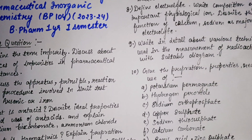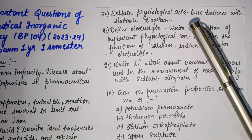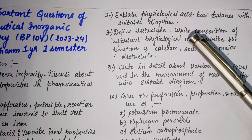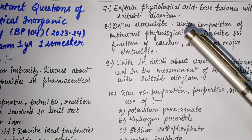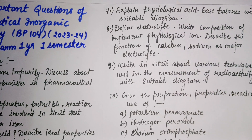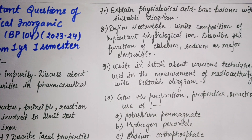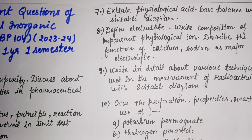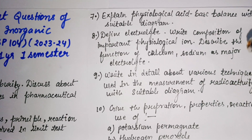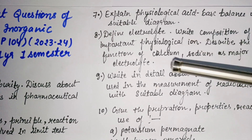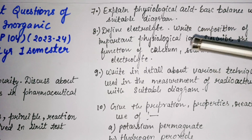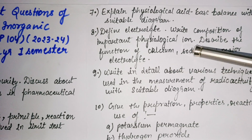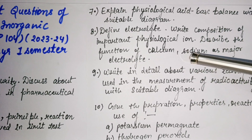The seventh question: explain the physiological acid-base balance with a suitable diagram. The eighth question: define electrolyte with the composition of important physiological ions, and describe the functions of calcium and sodium as major electrolytes. Electrolyte definition is worth two marks, and we must cover the functions of calcium and sodium.